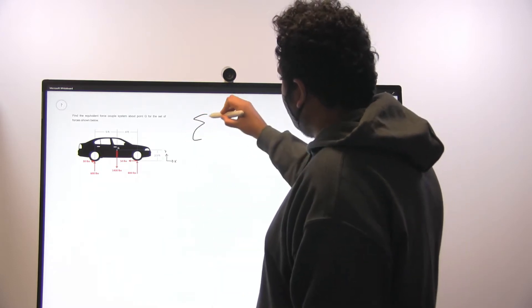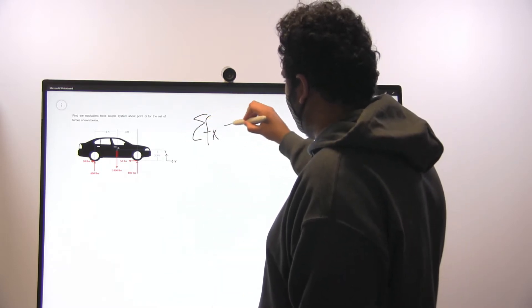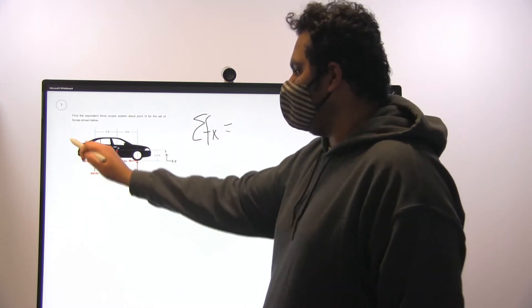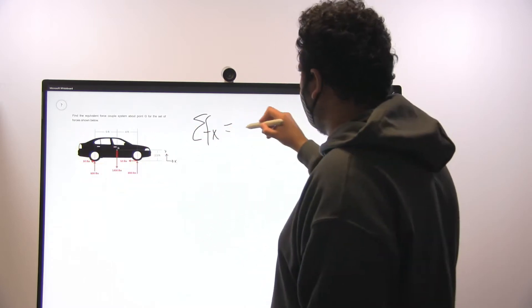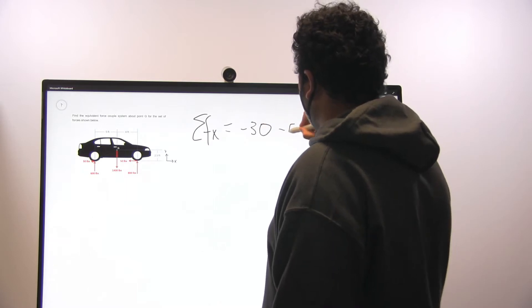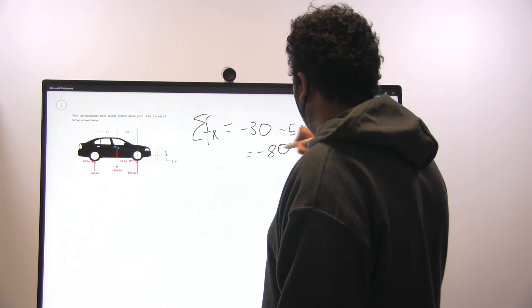So sum of forces in the x direction is minus 30 minus 50, which is equal to minus 80 pounds.